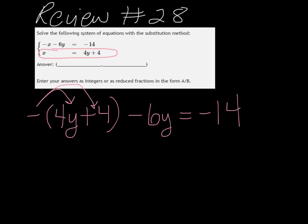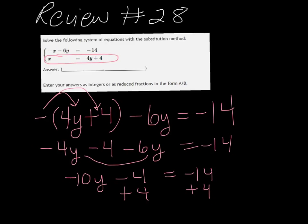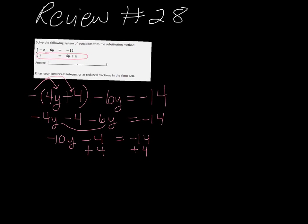So we get minus 4y minus 4 minus 6y equals negative 14. When we combine the y's, we have negative 10y minus 4 equals minus 14. Add that 4 over, and we get negative 10y equals negative 10. Divide both sides by negative 10 and we get y equals 1.